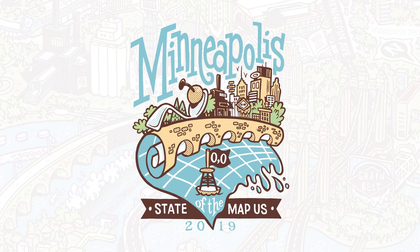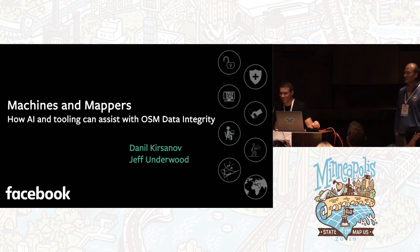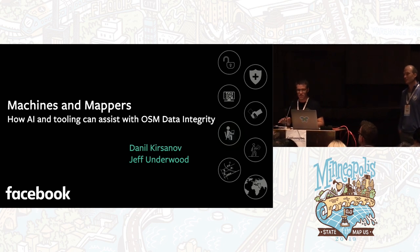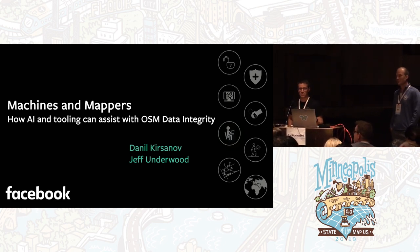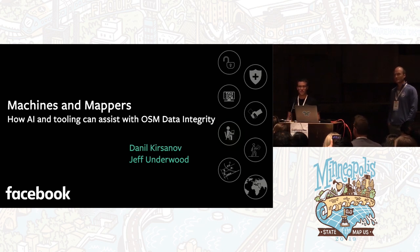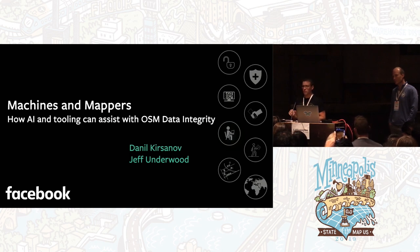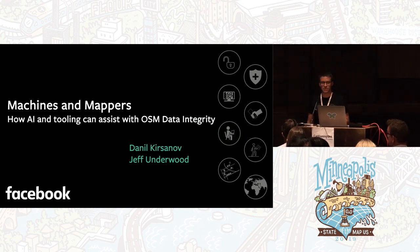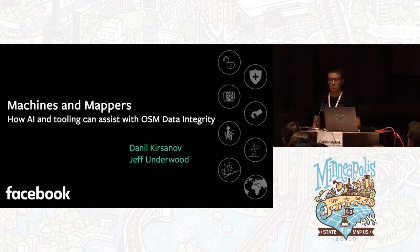Maintaining a database of millions and millions of features is no easy feat. OpenStreetMap contains millions of features, thousands of mappers, and maintaining and ensuring data quality has always been a challenge throughout the entire history of the project. At Facebook, we've been thinking about ways to maintain the quality, but also improve it and ensure that only good data gets on the map. Today we're going to talk about how AI and tooling can do that.